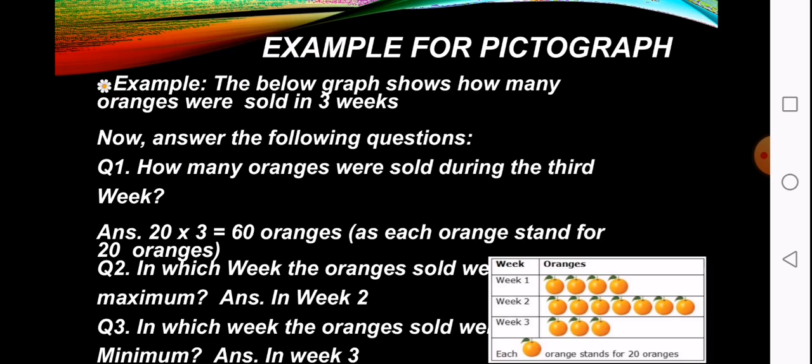Now see the example. The below graph shows how many oranges were sold in three weeks. Answer the following question. Question number one: How many oranges were sold during the third week? Look here carefully. One orange picture is equal to 20 oranges. So, 20 times 3 is equal to 60 oranges, as each orange stands for 20 oranges.